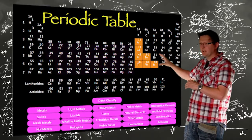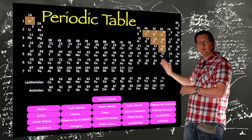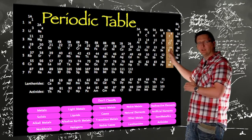Next to the transition metals you've got the post-transition metals, then the non-metals, the halogens, and then the noble gases.